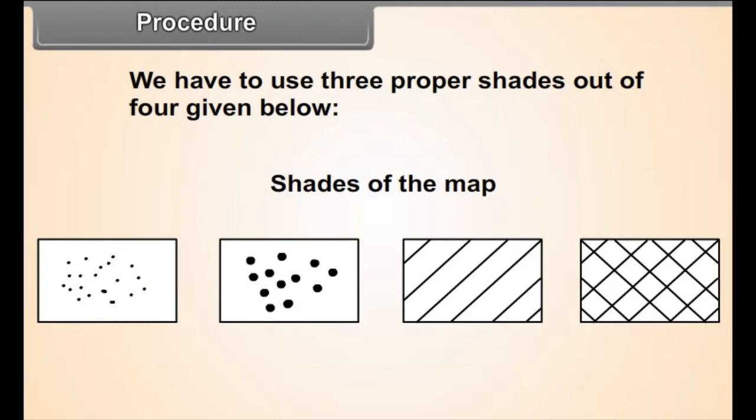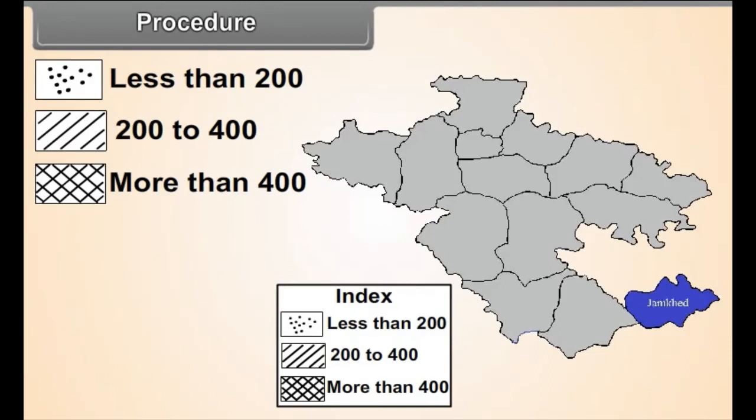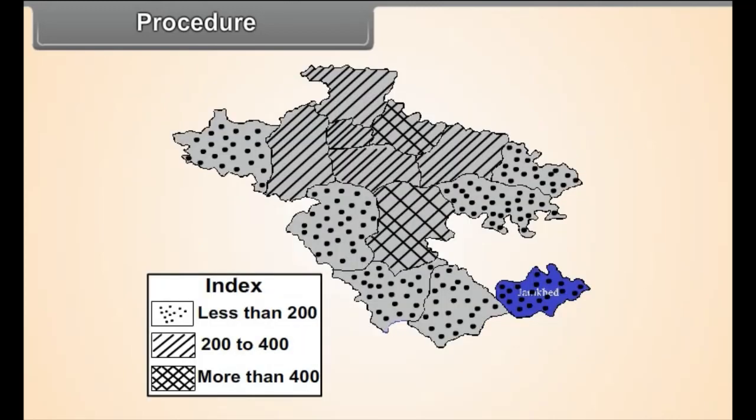You have to use three proper shades out of the four given below. Draw the district map given in figure 2.5 on a sheet of tracing paper. Use dark to faint shades for higher to lower density values. Give proper shades to different Talukas on the basis of their density values and complete the map. Prepare an index and show the same in the map. This is how a choropleth map is prepared.